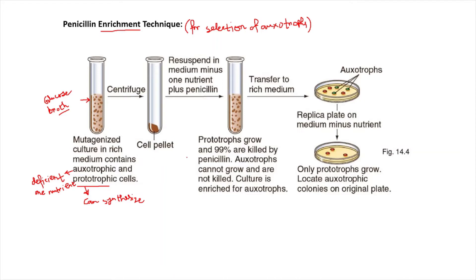We are intending to select for auxotrophs from prototrophs on the basis of this principle. Since the glucose salt broth contains both prototrophs as well as auxotrophs, first we centrifuge it to collect the cell pellet and discard the supernatant. We then resuspend the cell pellet in a medium that lacks one particular essential nutrient, and we also add penicillin to this medium.